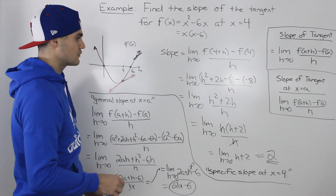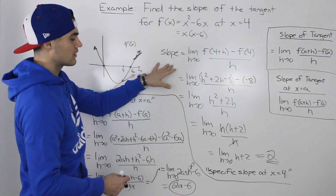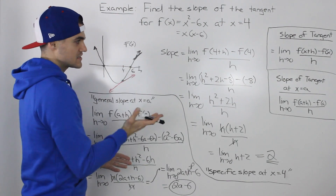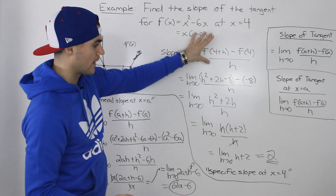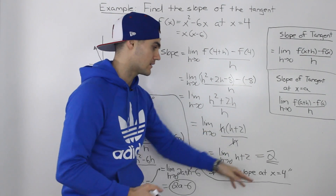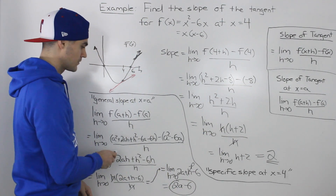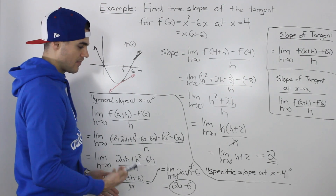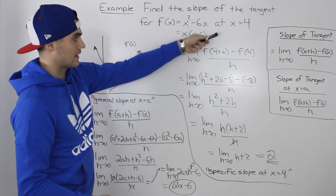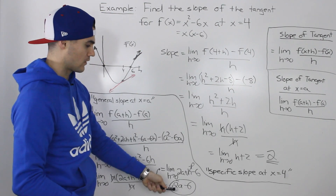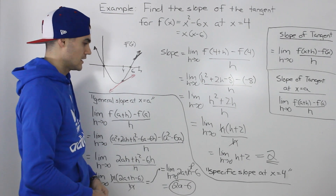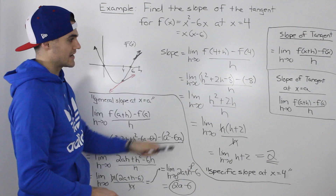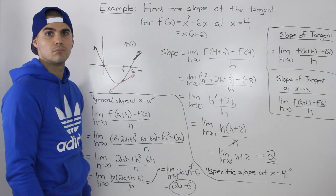So those are two different approaches. In the first, we plugged in x = 4 directly and found the specific slope of 2 right away. In the second, we found the general slope 2a - 6 first, then plugged in a = 4 to get 2. Teachers often show the first way, while textbooks often show the second — so I wanted to demonstrate both.